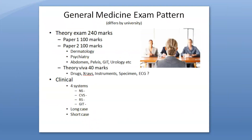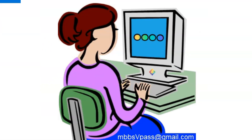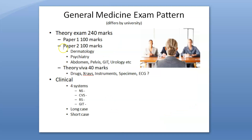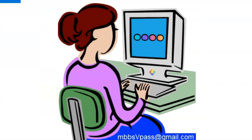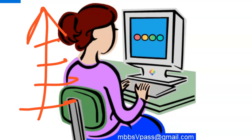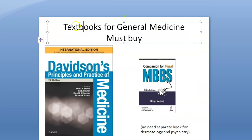That's the overall exam pattern for General Medicine. One important thing to understand is that General Medicine is just a culmination of what you have studied over four and a half years of MBBS. If you've focused throughout, you just need to build on it a little. It's very easy to score in General Medicine - if you remember your Pathology, Microbiology, and related subjects, writing those answers will get you a lot of marks.